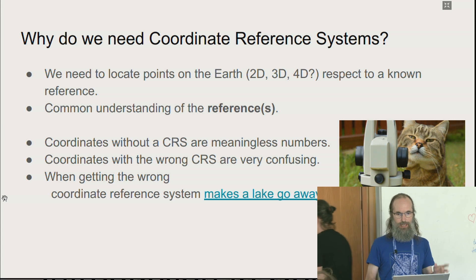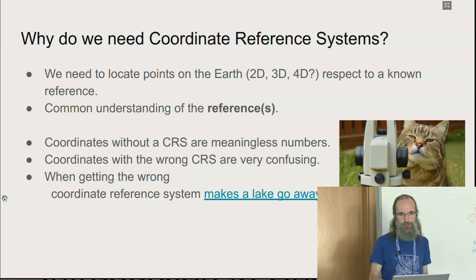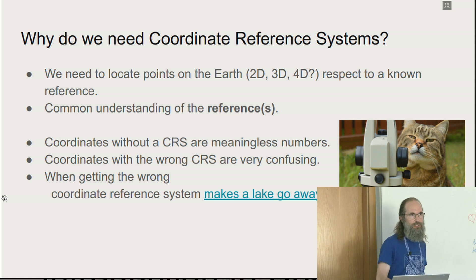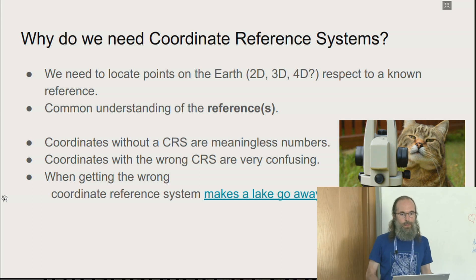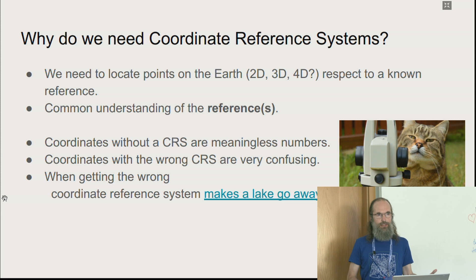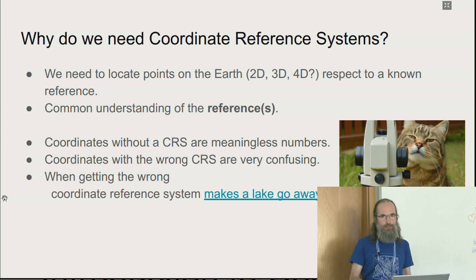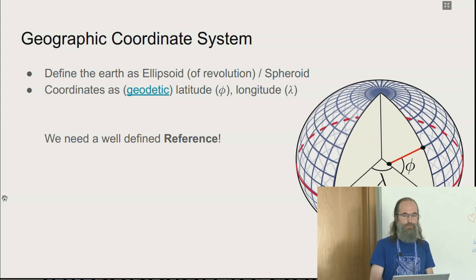Australia is up to eight or nine centimeters per year. So things are moving, and we have time components to consider — though not in this presentation. For coordinates, we need a common reference. If we are talking about coordinates, we have to agree on what our reference is. Coordinates without a reference system are meaningless, the same way as measurements without units are meaningless. Using the wrong coordinate reference system can cause really big problems.